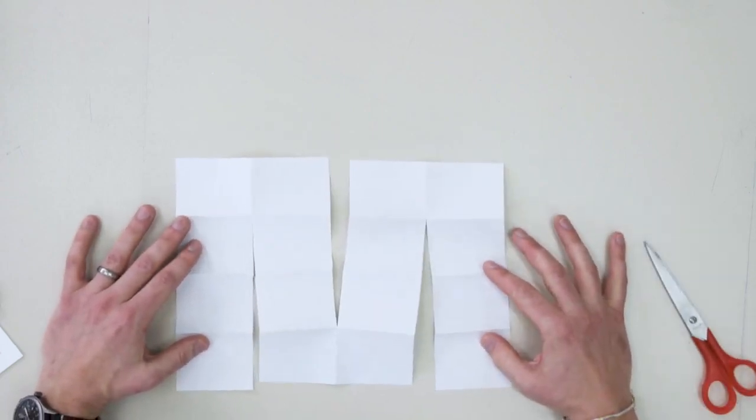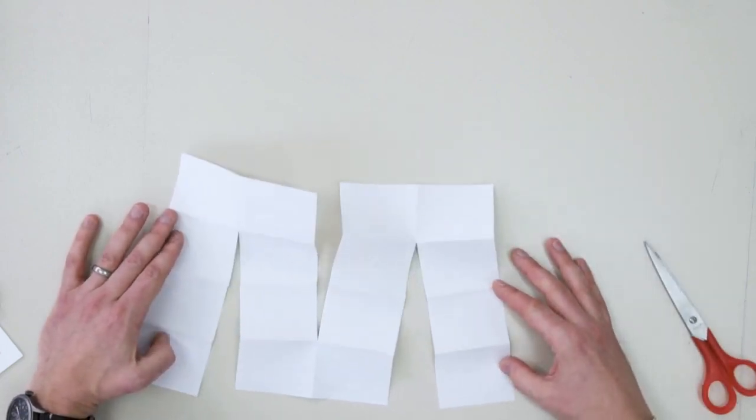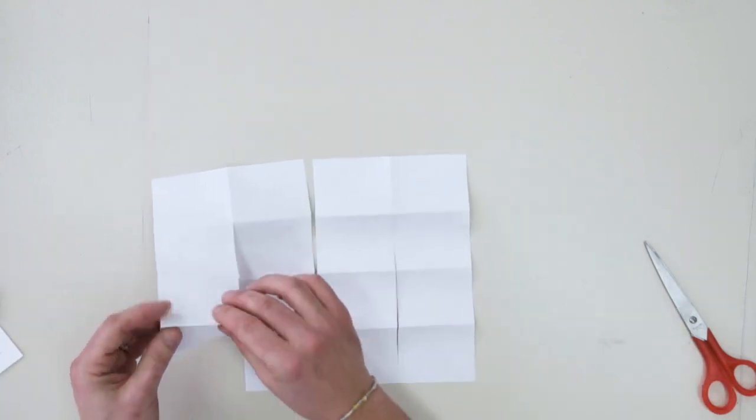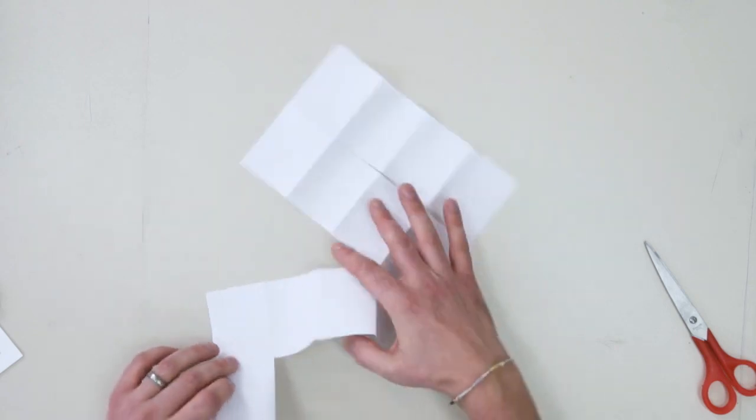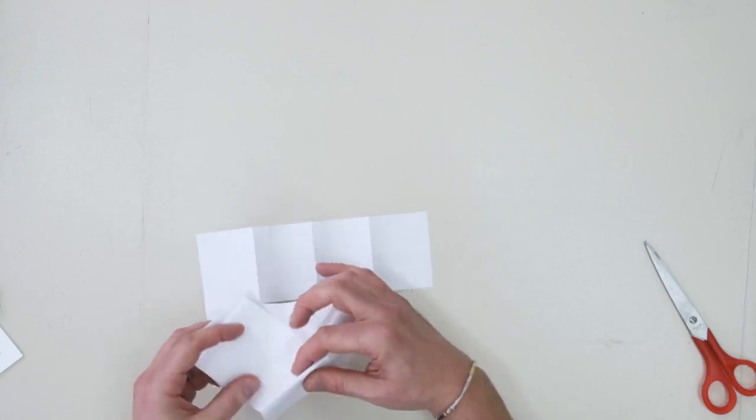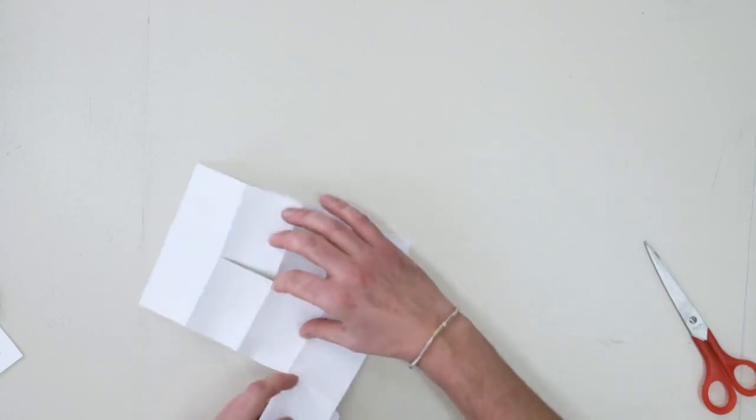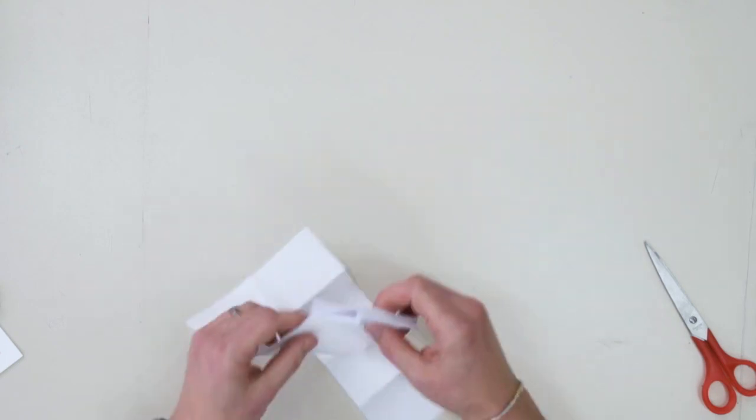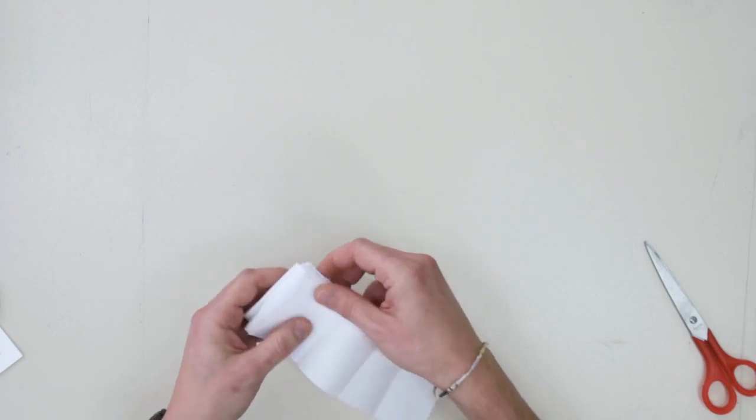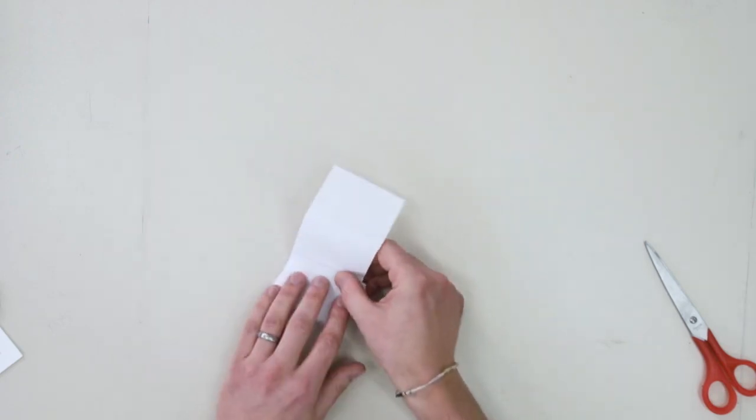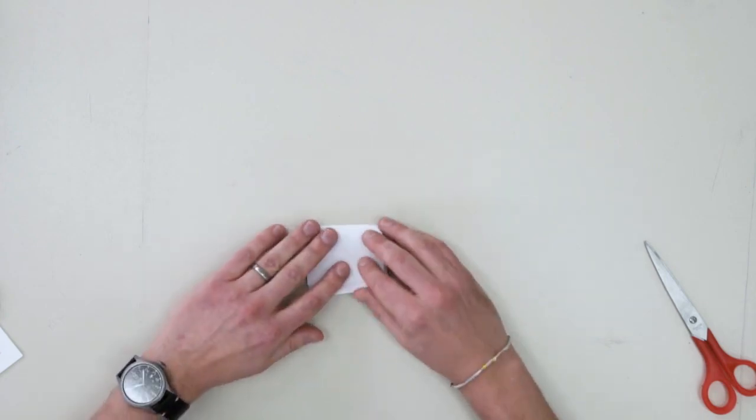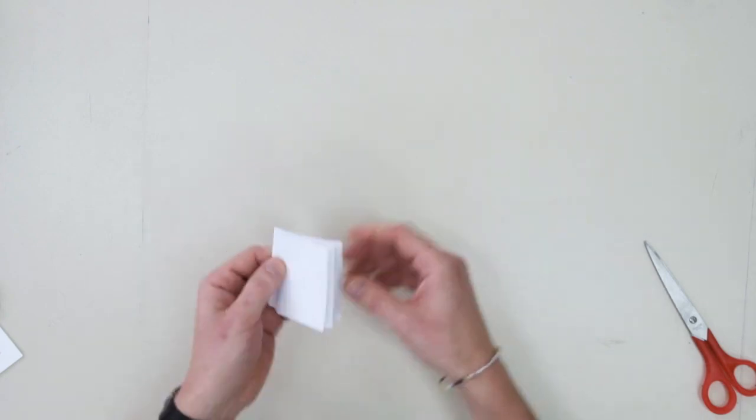If everything went well, you should have an M or two pairs of pants. At this point, you're ready to fold it up. Now for folding, it's really easy. You're just going to alternate back and forth and it should happen kind of naturally. Once again, if anything needs to be re-creased, you can go back and score or give it a good squish to get started. So there we have it.